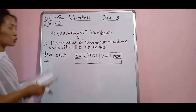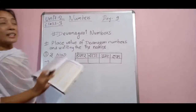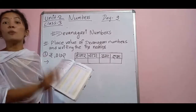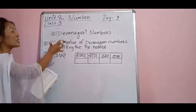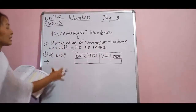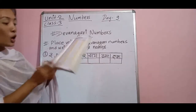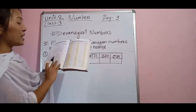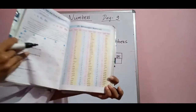For this you must know — you must be able to write the Devanagari number names or Devanagari numbers from 1 to 100. It is not possible to write all the Devanagari numbers and Devanagari number names from 1 to 100 on this board. So I would like to suggest you to see the book of Class 3 at page number 57.